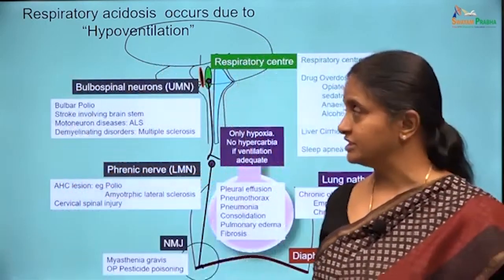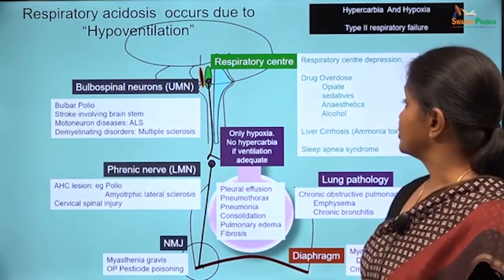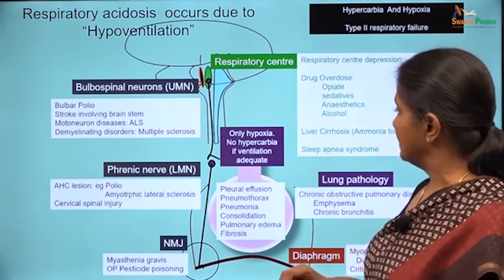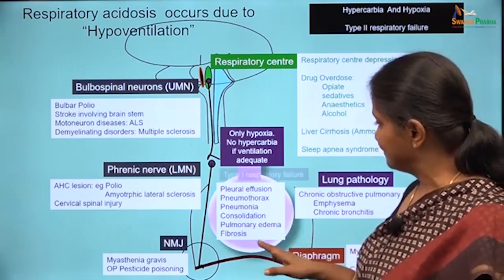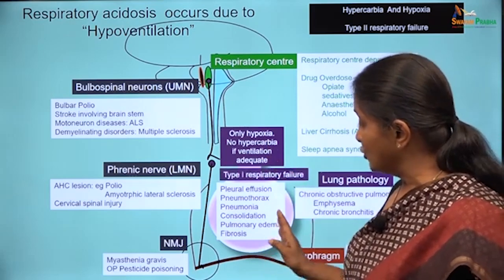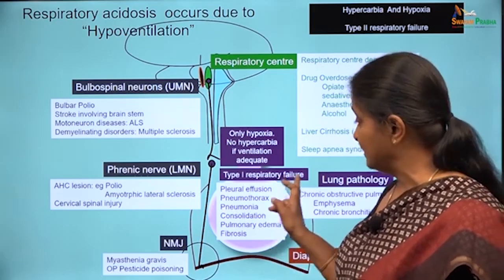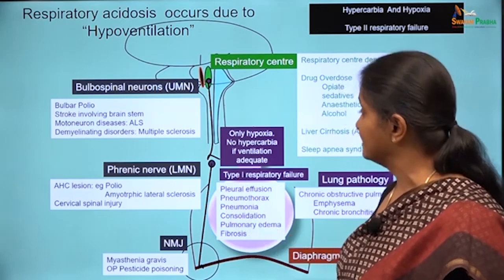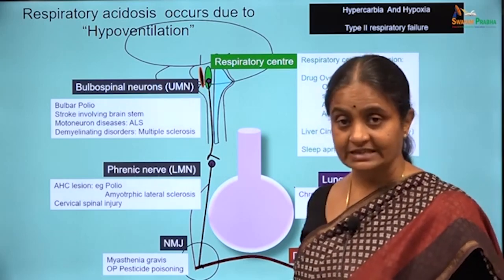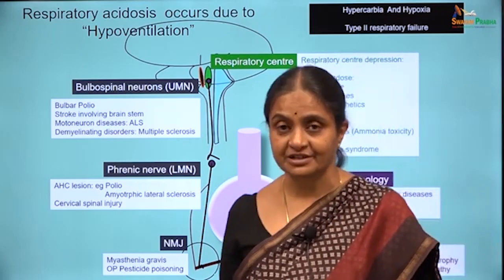These are the causes of respiratory acidosis or type 2 respiratory failure, which is associated with hypercarbia and hypoxia. In contrast, type 1 respiratory failure states are not associated with hypercarbia — there is only hypoxia.